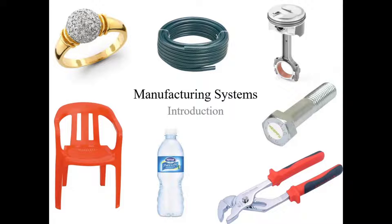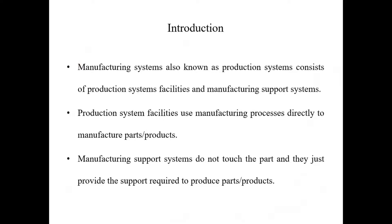In this video, we will discuss about the manufacturing systems. First of all, we will have a brief introduction. These manufacturing systems are also known as the production systems, and we can divide these production systems into two different categories: the facilities of the production systems and the manufacturing support systems.